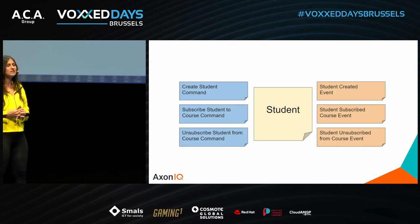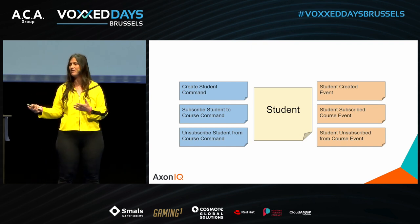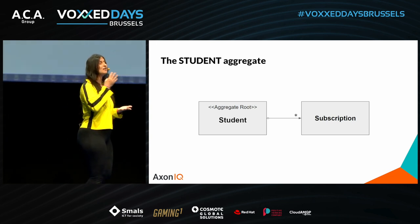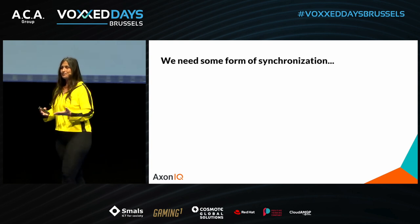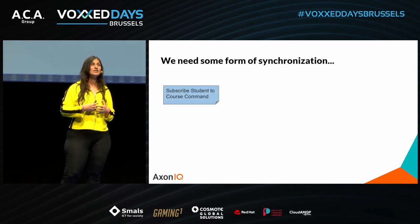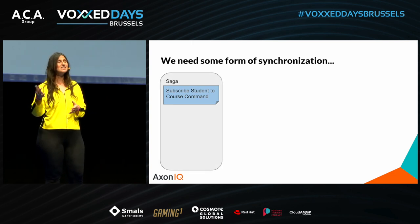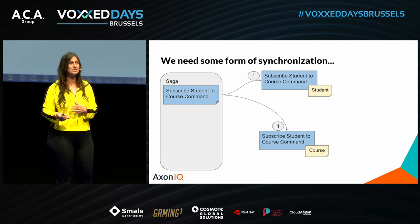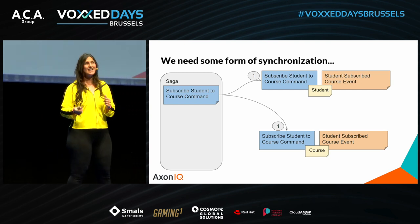With our new student aggregate, exactly like the course aggregate, the student will contain the subscriptions needed to validate any subscription and unsubscription request. This situation requires synchronization: any request to subscribe a student to a course must be handled by a component capable of dispatching the command to both the course and the student aggregates, which then publish their respective events.